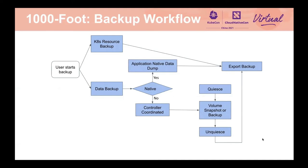I want to walk you through what a backup workflow looks like within the Kubernetes context. The workflow starts from the left and ends on the right. A user kicks off a backup process which includes two pieces. One is the Kubernetes resources that the backup contains, scoped to a certain application — most likely a simple API resource YAML file dump — exported into a remote repository with an independent lifecycle from your cluster. The other major piece is data backup.